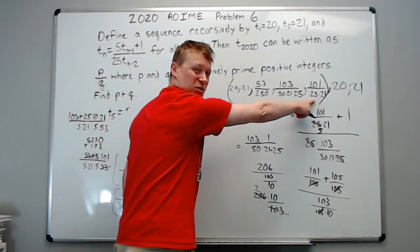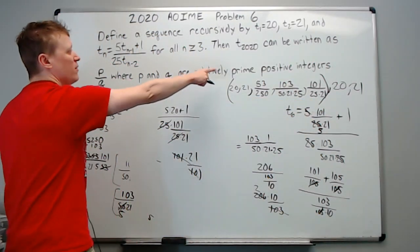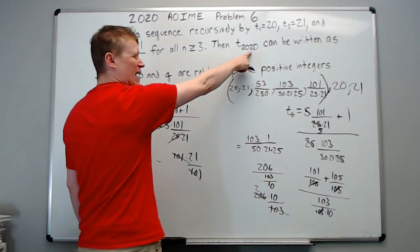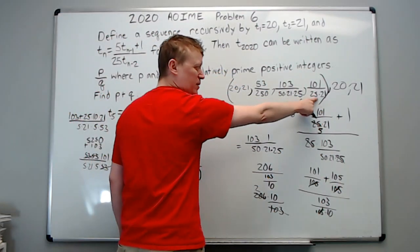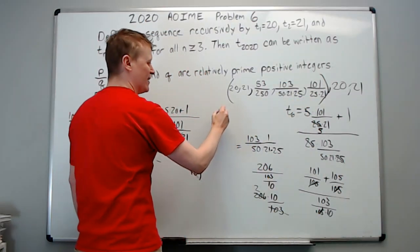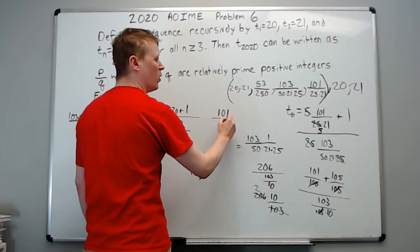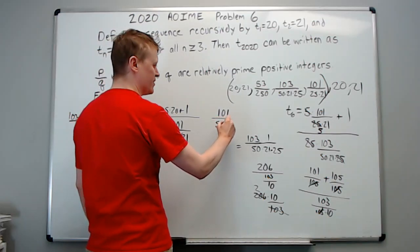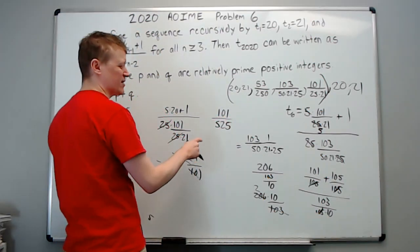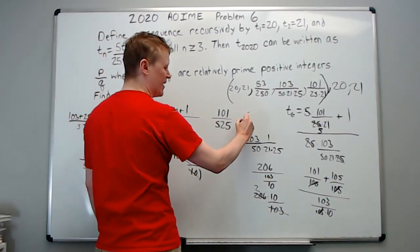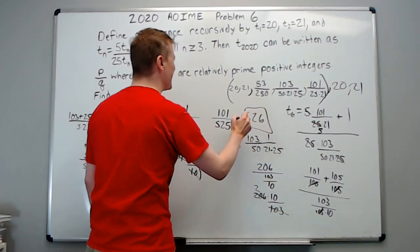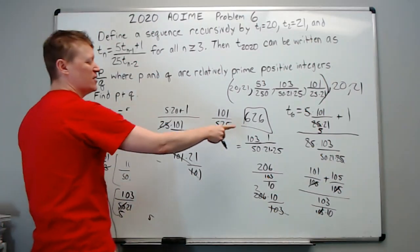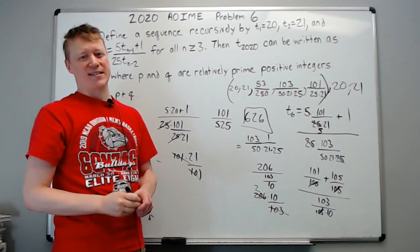We count how many terms are in the repeating cycle: one, two, three, four, five terms — so the sequence repeats every 5 terms. Since 2020 is a multiple of 5, t₂₀₂₀ will be this last term in the cycle: 101 over (25·21). Now 25·21 = 525, so p = 101 and q = 525, giving p + q = 626. The answer is 626.